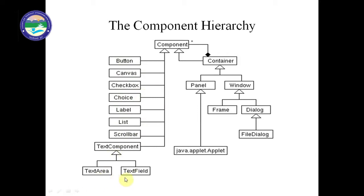Text component is divided into text area and text field. We also have container, and inside the container we can store multiple components. You can see the relational diagram of all these components. A container is a combination of different components. The container can be included inside a panel, and panel is part of the java.applet.Applet class. The file dialog has dialog and frame, and dialog is a subclass of window. These are the base classes — this is the component hierarchy model of Java AWT.